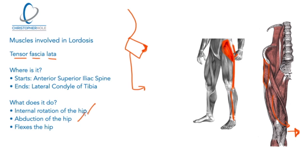The TFL also abducts the hip — taking the foot out to the side — and assists in flexing the hip as well. So there is a crossover with the anterior pelvic tilt, and it assists in both the anterior pelvic tilt and the internal rotation of the knee.